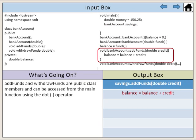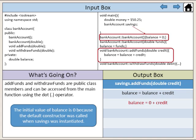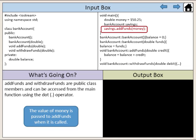Add funds and withdraw funds are public class members and can be accessed from the main function using the dot operator. In this example, we have declared the variable money with a double data type and assigned it the value of 150.25. We have also instantiated the object savings using our bank account class. Our class method add funds alters our private member balance. The initial value of balance is zero because the default constructor was called when savings was instantiated.